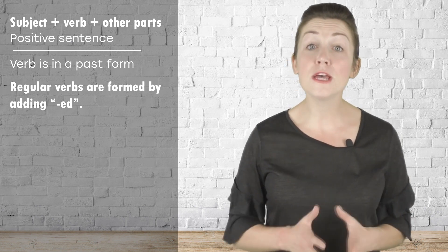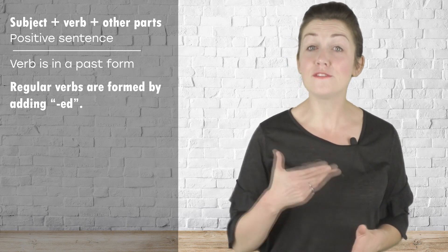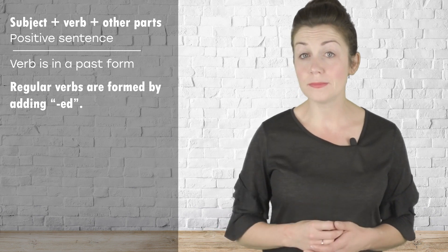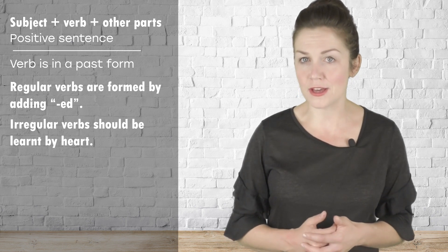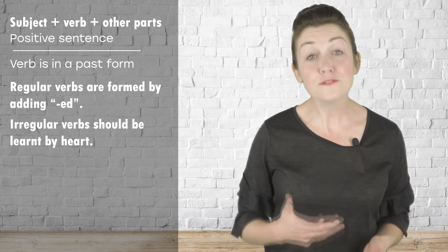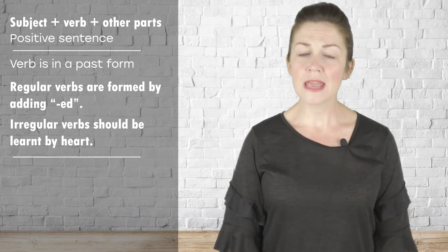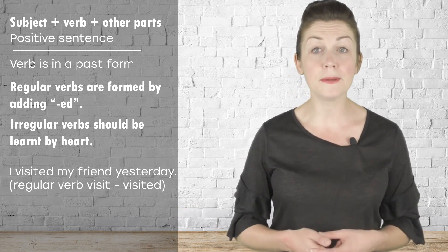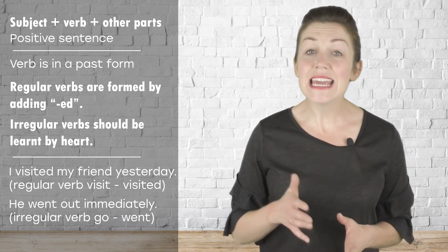Regular verbs are the verbs which form the past form — the second form — by adding -ed to the first form of the verb, the infinitive without the particle 'to'. Irregular verbs build their forms differently; there are no rules for them and they have to be learned by heart. For example: I visited my friend yesterday — 'visit' is a regular verb. He went out immediately — 'went' is an irregular verb.